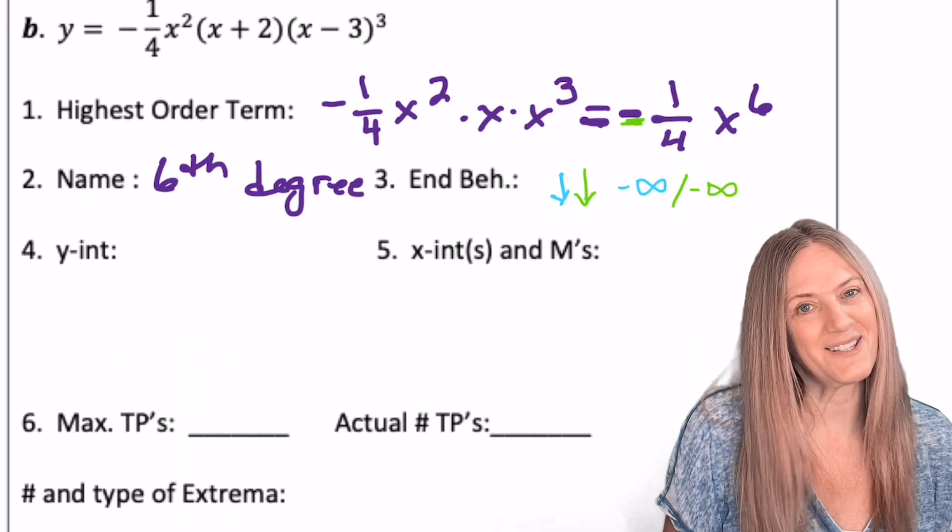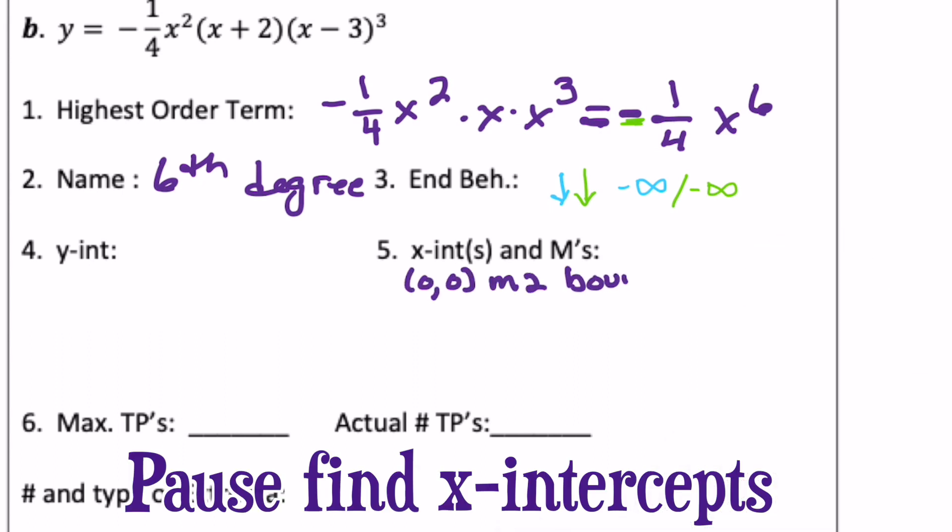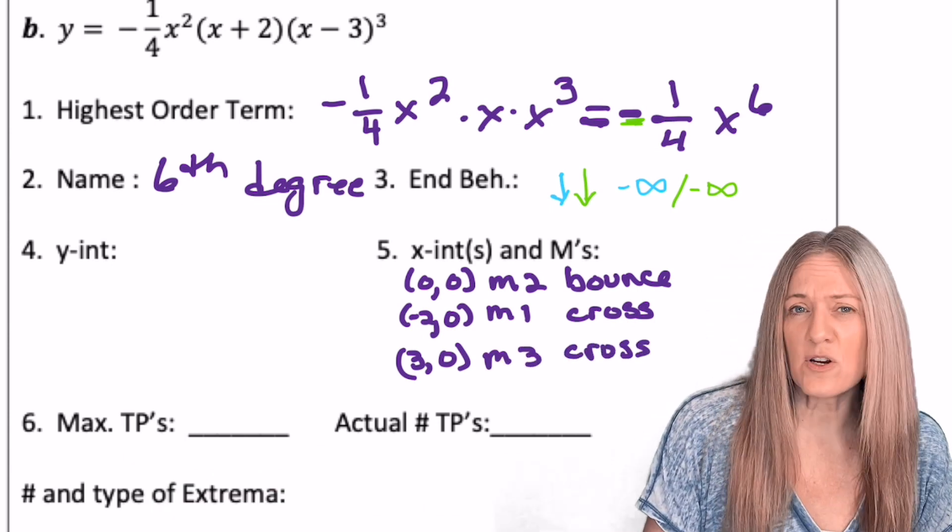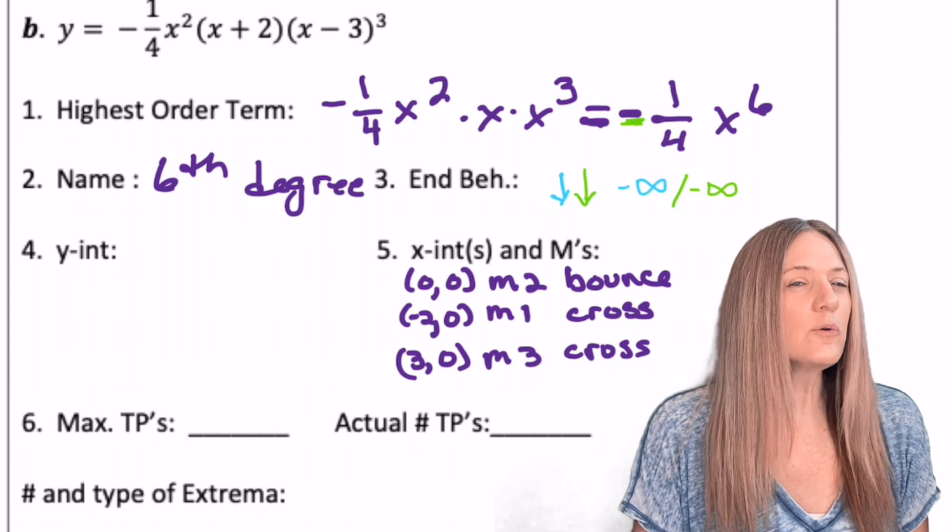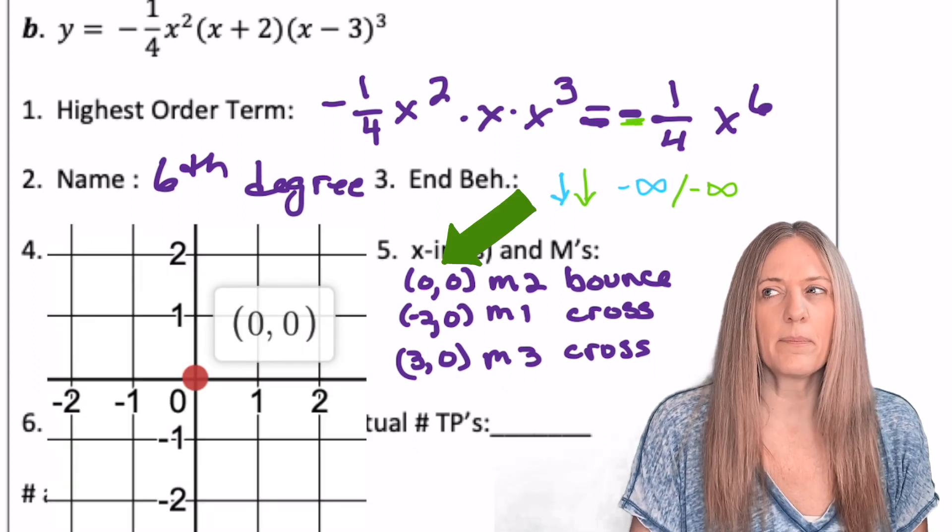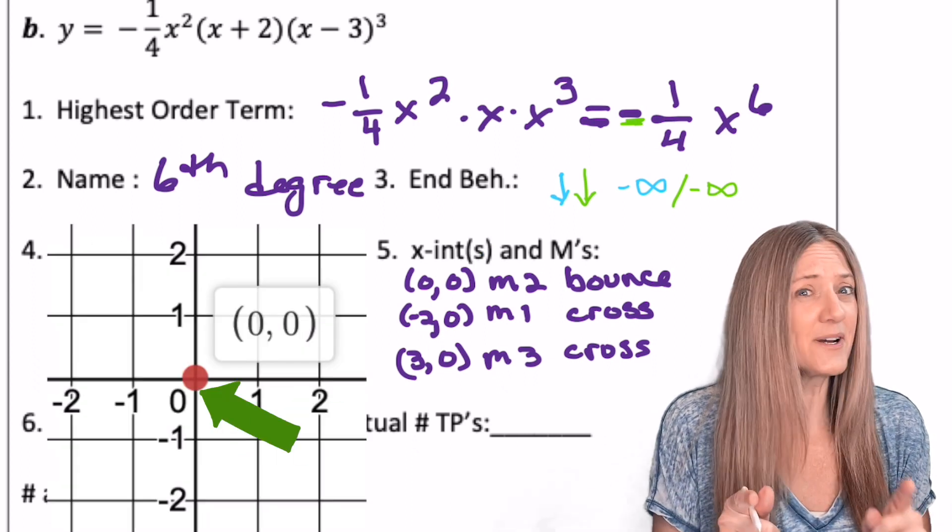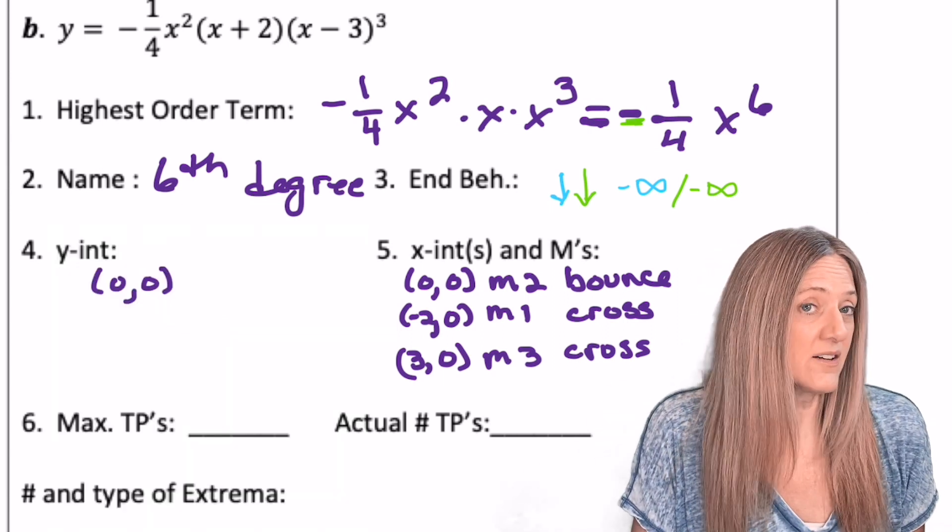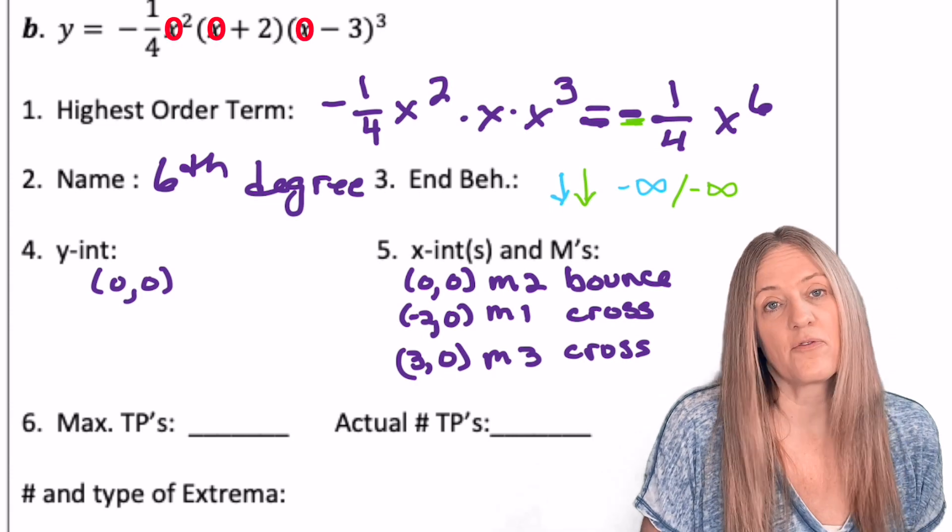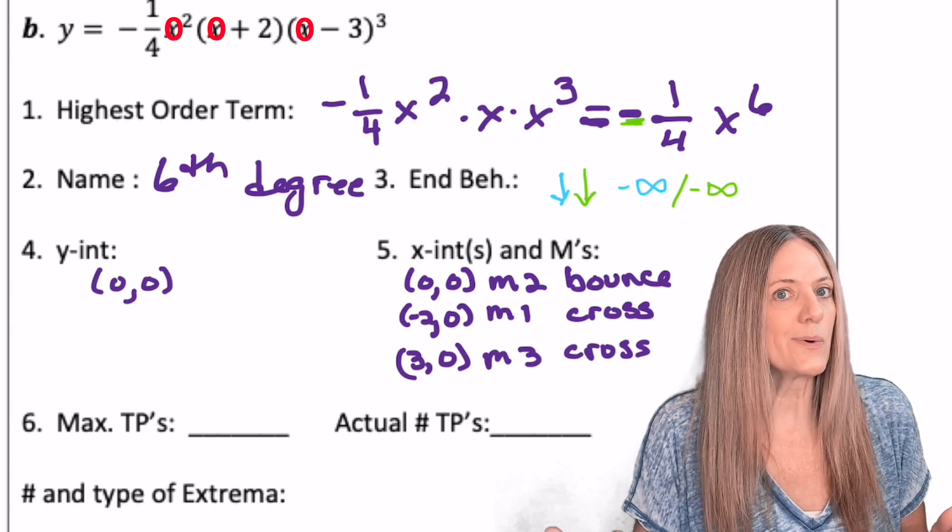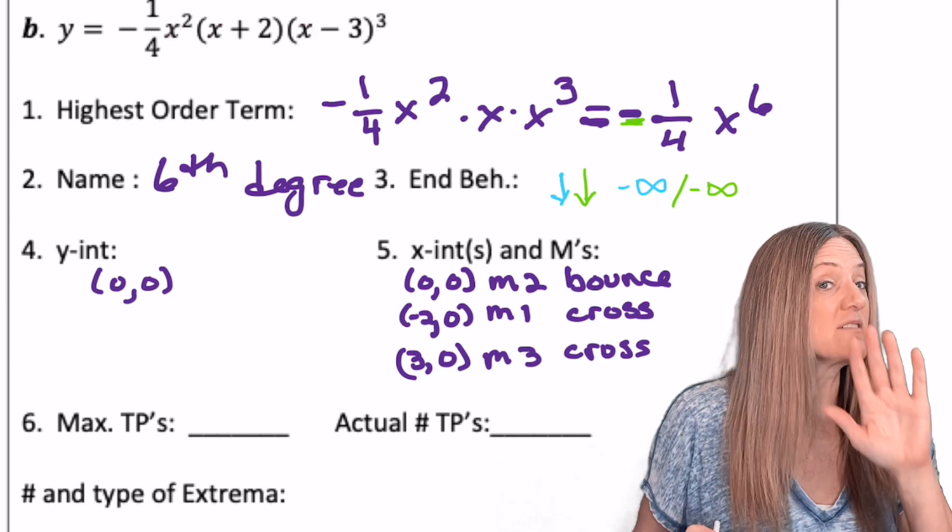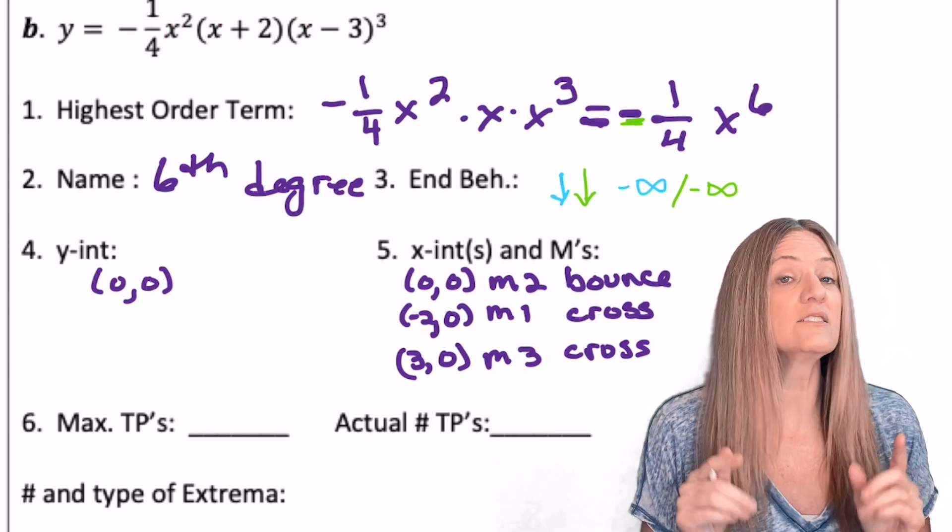Let's do our x-intercepts and multiplicities. So we see that we're going to bounce at zero, zero. The other two are going to cross. Now, zero, zero is an x-intercept, but zero, zero, the x-coordinate and the y-coordinate are zero. Well, you already figured out the y-intercept the other way, just plugging in zero for x, well, one fourth times zero squared is zero times anything else is going to be zero. If it's six degree, I can have at most five turning points. Doesn't mean I will, just means I could.